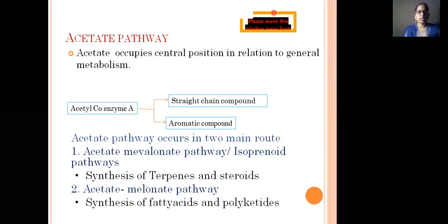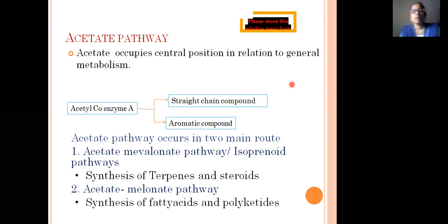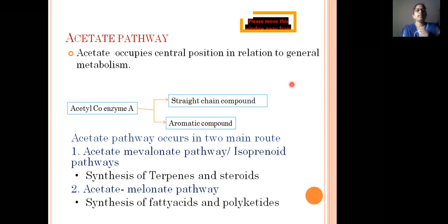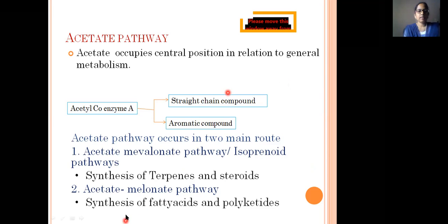Today's topic is the acetate pathway. The acetate pathway occupies a central position in relation to general metabolism. The starting material is acetyl-CoA, which acts as a precursor for the acetate pathway. Acetyl-CoA leads to the formation of both straight-chain compounds and aromatic compounds.